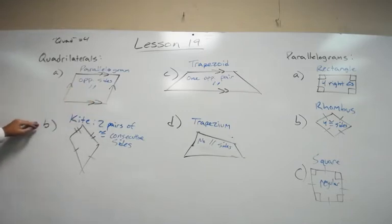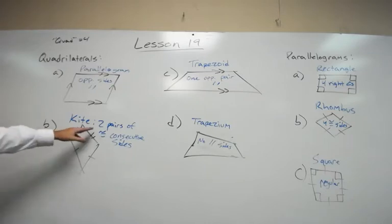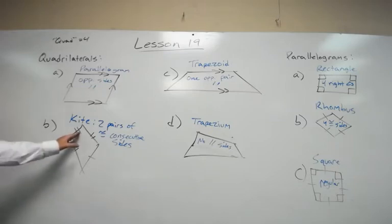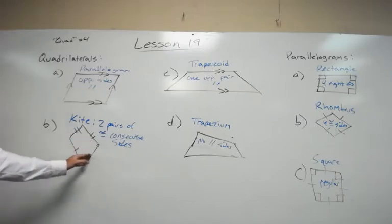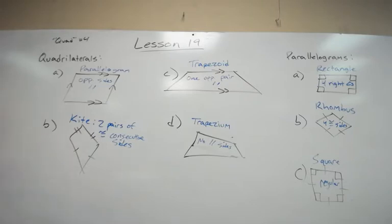Next, we have a kite. These are all four-sided polygons, quadrilaterals. Two pairs of consecutive sides are congruent. So you have consecutive sides here, consecutive sides here, and they're congruent to each other. That would be a kite.